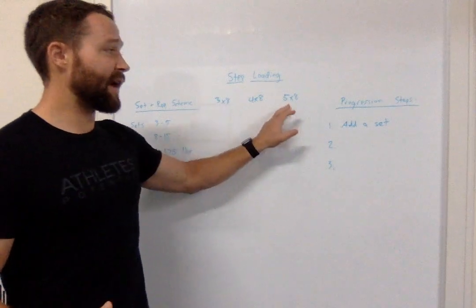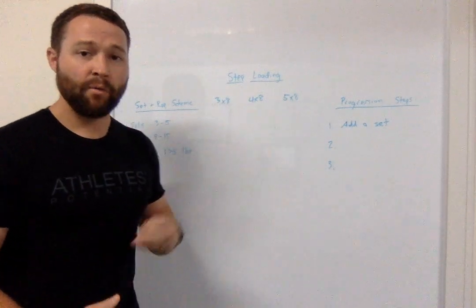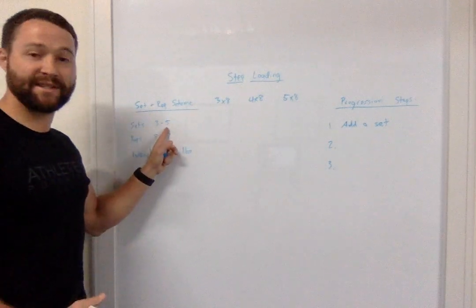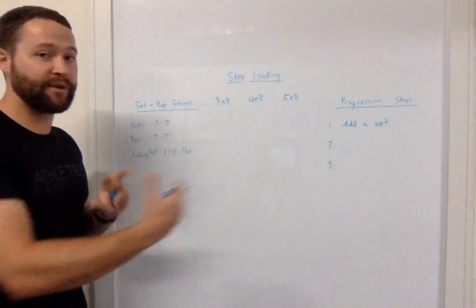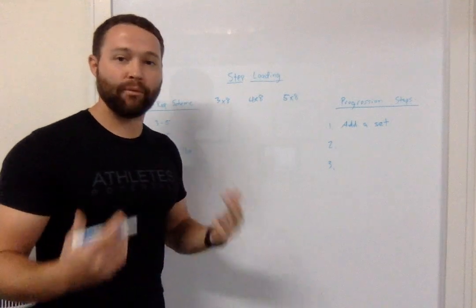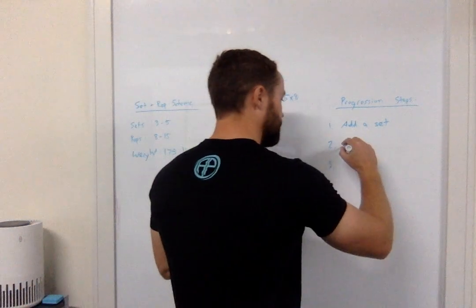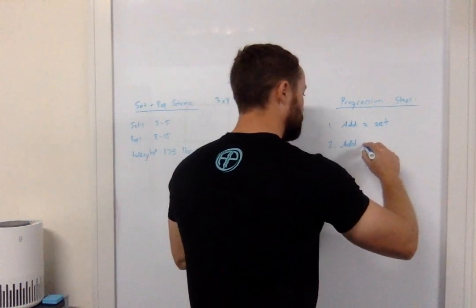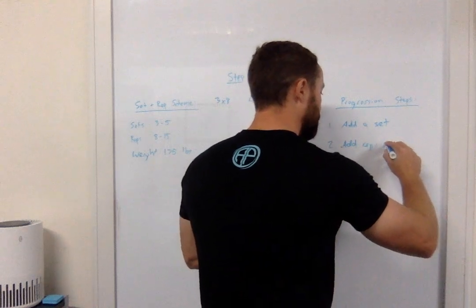Now when five sets of eight becomes too easy we've hit the top of our set scheme at five, we don't have any more sets to go. How do we make this harder? Now at this point we're going to add reps per set. So that goes here. Reps per set.